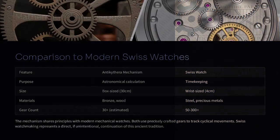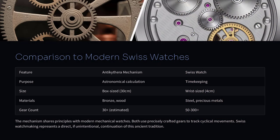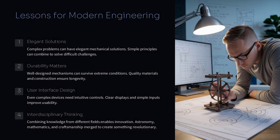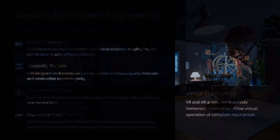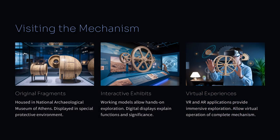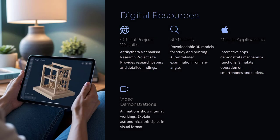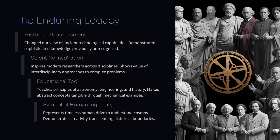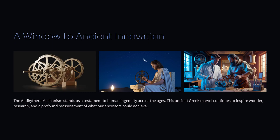In summary, the Antikythera mechanism is a clear example of how advanced ancient technology could be. It combines the precision of mechanical engineering with a deep understanding of the cosmos. By looking at how the device was built and used, we gain insight into the ingenuity of the ancient Greeks and their ability to solve complex problems. What lessons can we learn from this remarkable invention? Perhaps that innovation isn't new and that creativity and skill can lead to breakthroughs no matter the era.